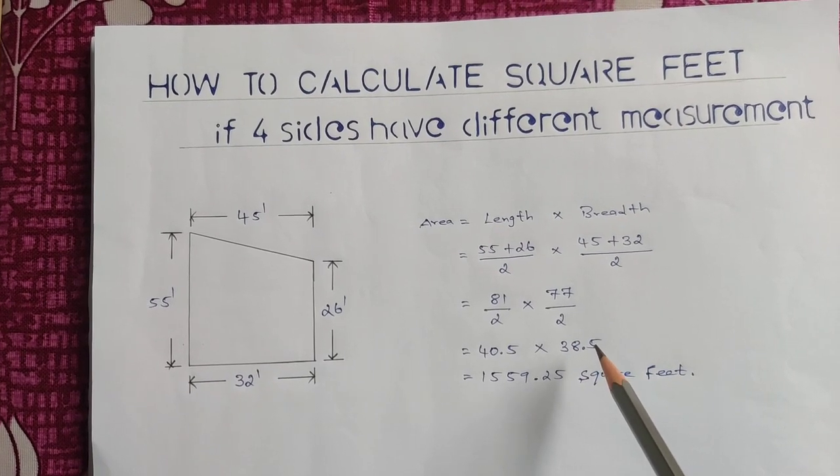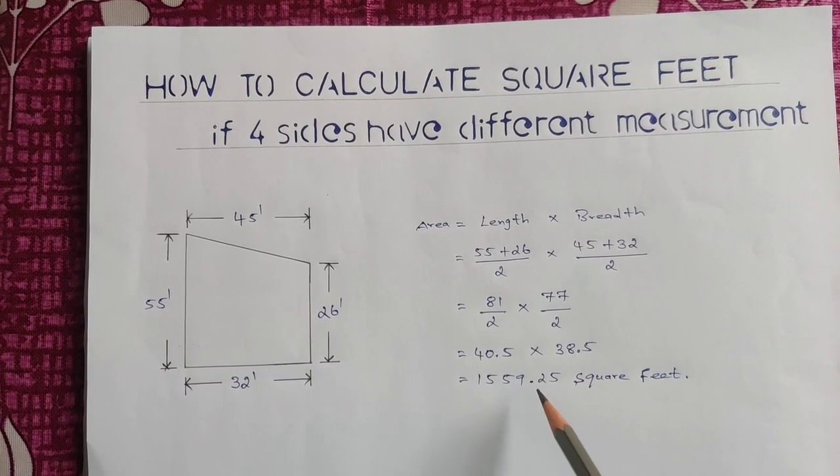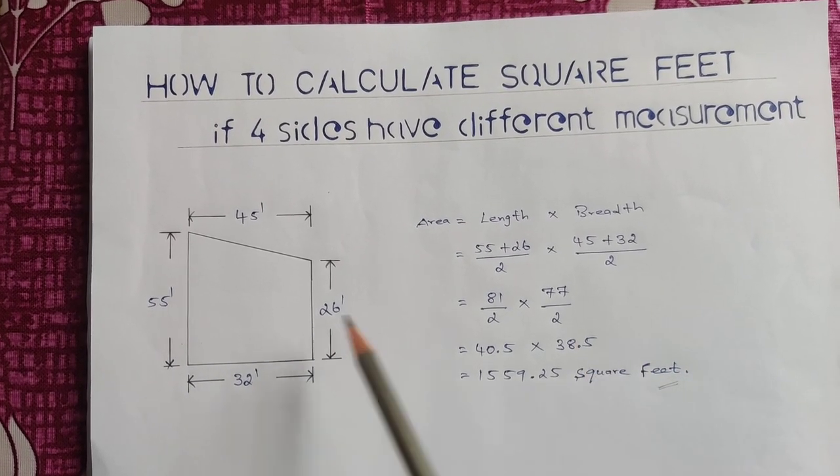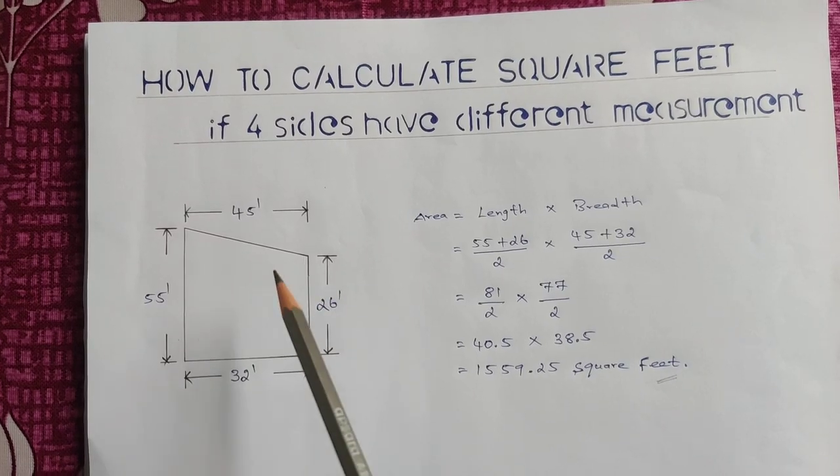When we divide by 2, we get roughly 40.5 times 38.5. So if we multiply these, we get 1559.25 square feet.